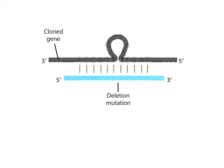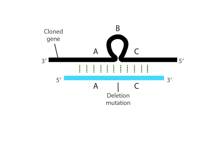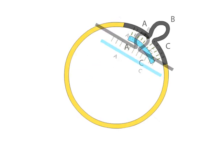Here, a mutation will be introduced into section B of the gene. The template DNA must be single-stranded circular DNA as in M13, a filamentous bacteriophage.